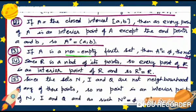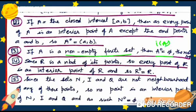Example 3: If A is a non-empty finite set, then A° (also written as A0 or iA) equals φ, the null set. The interior of any non-empty finite set is the empty set.